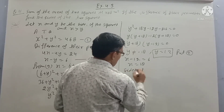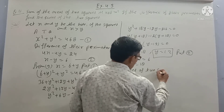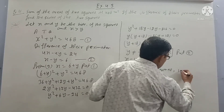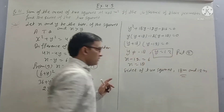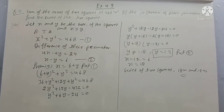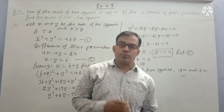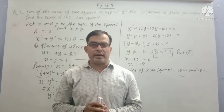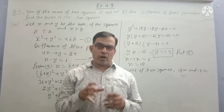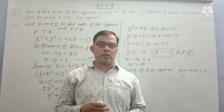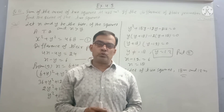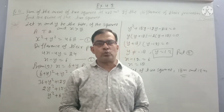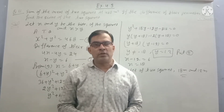The sides of the two squares are 18 meters and 12 meters. That is your answer. Exercise 4.3 is complete. You can find all videos in the playlist on YouTube to clear your topics. If you liked this video, please like, share, and subscribe. Thank you for watching.